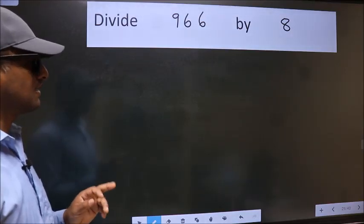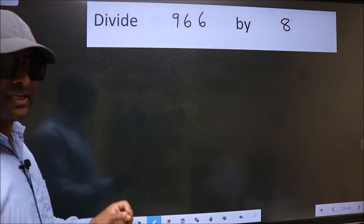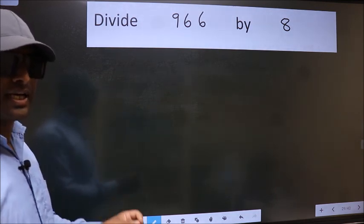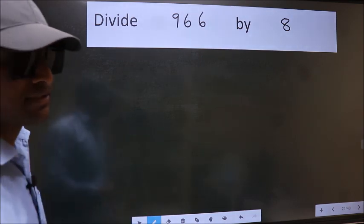Divide 966 by 8. While doing this division, many do this mistake. What is the mistake that they do? I will let you know. But before that, we should frame it in this way.